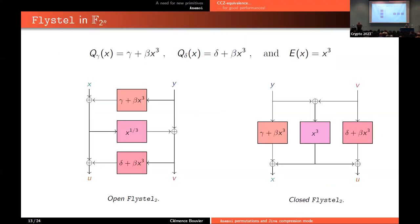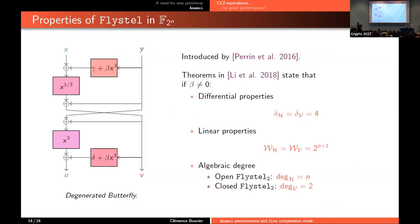We have different variants depending on the field. In F2 to the N, we use the cube as both the quadratic function and the permutation. For the closed flystel we use only cubes, and for the open flystel we have two cubes and the inverse of the cube. If you look at this open flystel, you can represent it as a generalized butterfly structure, which is already well-studied in Boolean functions — we know the differential uniformity, linearity, and algebraic degree. For the differential uniformity and linearity, we cannot do better for these kinds of constructions. For the algebraic degree of the closed flystel, it is two, and we cannot do better without having a linear function.